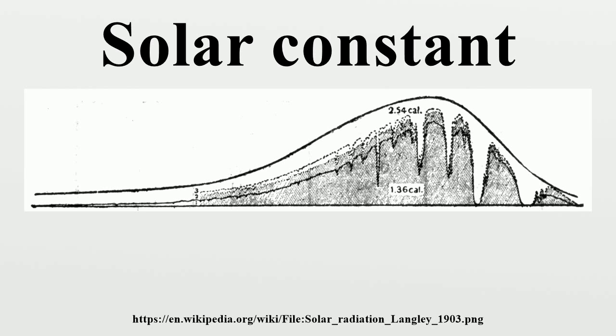Taking into account the angle at which the rays strike and that at any one moment half the planet does not receive any solar radiation, is one-fourth the solar constant. The amount reaching the Earth's surface is further reduced by atmospheric attenuation, which varies.